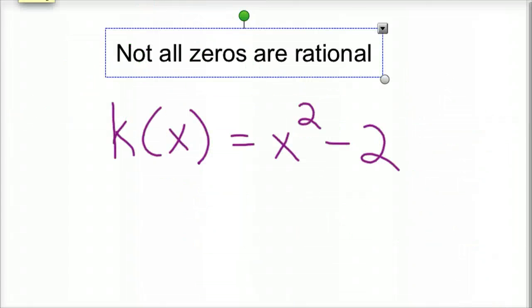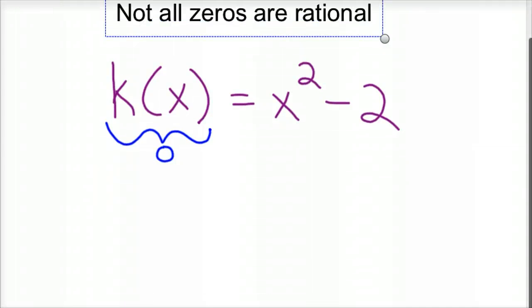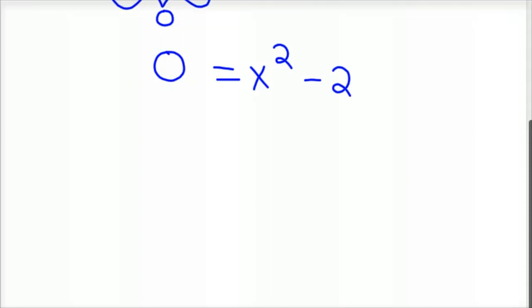The next thing: not all zeros are rational. By this point, hopefully you've figured out that to find your roots, or to find your zeros, we want this part to be 0. So what you can do is set that equal to 0 and solve it. So you've got x² - 2 = 0.